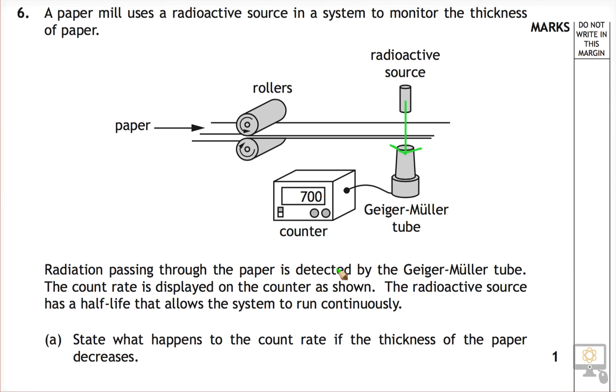The radiation passes through the paper as detected by the GM tube. The count rate is displayed on the counter as shown, and that's what we see here, this number 700.